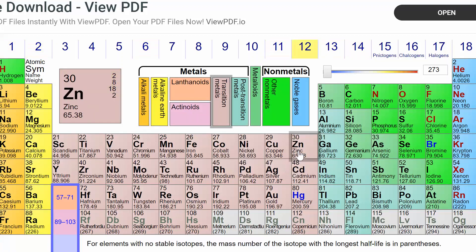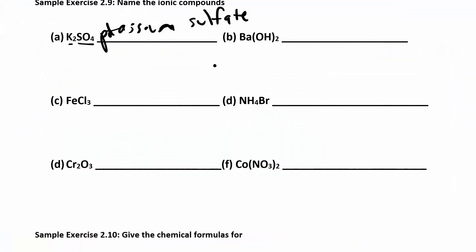Remember, everything in group 1 is plus 1, everything in group 2 is plus 2, and then silver is plus 1, zinc is 2, aluminum is 3, and everybody else is going to get a Roman numeral. Since potassium is a group 1, you don't need a Roman numeral. Now why is there a 2 here? Sulfate has a minus 2 charge, so this is telling me I really have potassium and potassium and then the sulfate. My charges add up. I need that 2, but I don't have to call this di-potassium anything. You don't use those prefixes for ionic compounds. You will see that next when we do molecular.